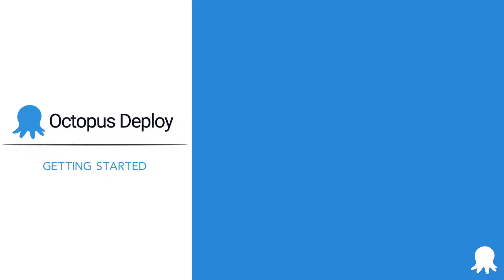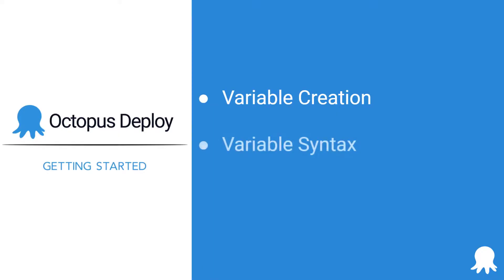Welcome to another Getting Started video for Octopus Deploy. This video will help you learn more about variables. We're going to cover variable creation, variable syntax, and scoping, along with how to use them in your deployment process. Octopus supports variables so that your deployment processes and runbooks can be parameterized. This allows your application to work across your infrastructure without having to hard code or manually update configuration settings. Let's get started.